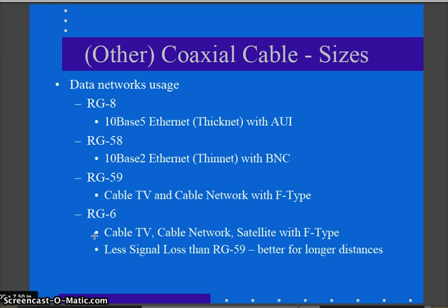RG58 came along after that. This was your thinnet coax using BNC-T connectors. The original Ethernet was 10Base-5 thicknet, and then as it progressed using thinner coax, it became 10Base-2 using RG58 coax.